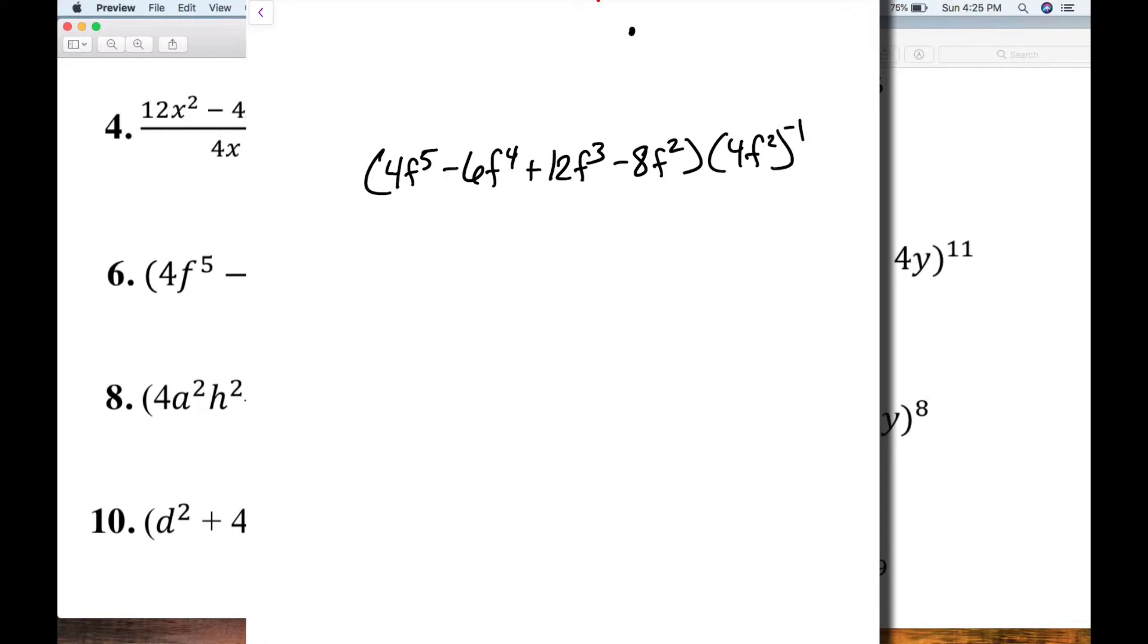So as I look at this, one of the things that pops out to me first initially is this. The fact that this is raised to the negative 1. I don't want the negative exponent. So I want to transfer that over to the denominator. And rather than rewriting the whole thing out, I'm just going to go ahead and move this down to the denominator. 4f squared. Let me clean this up now. So this is my new problem.